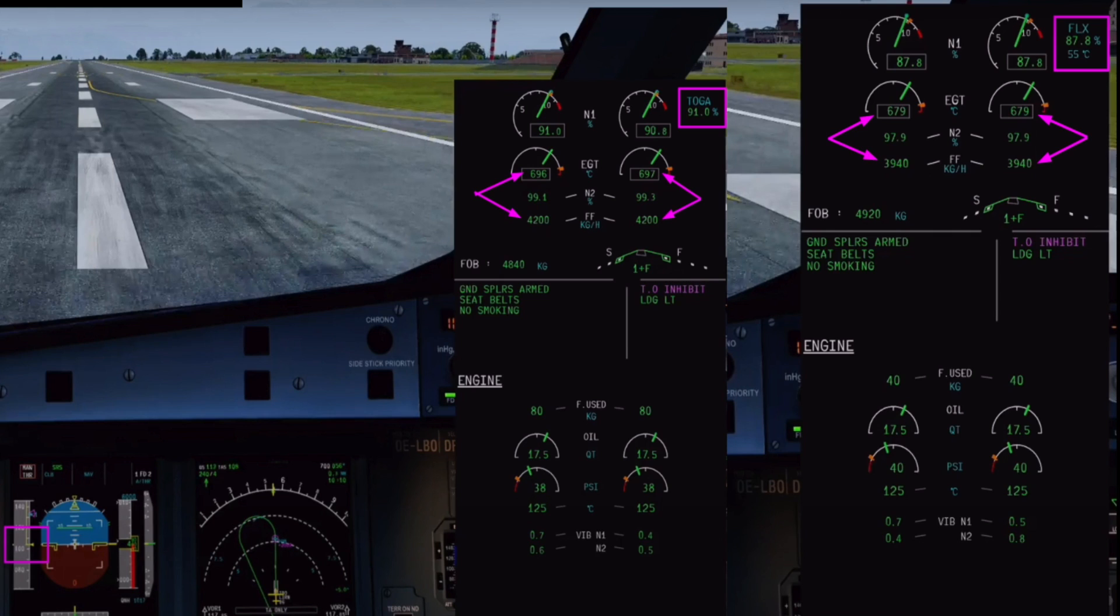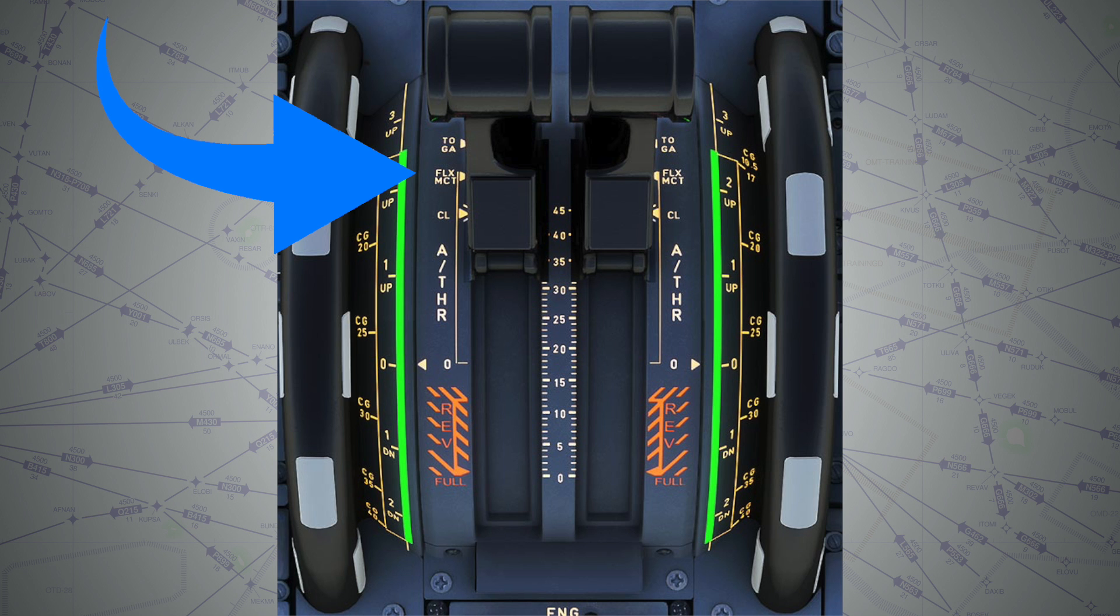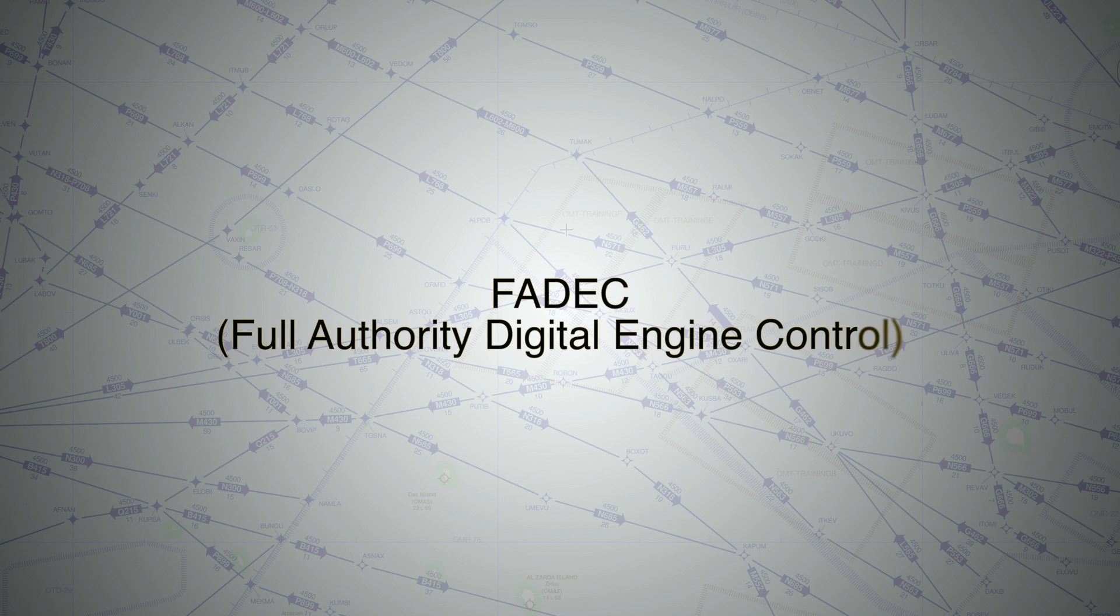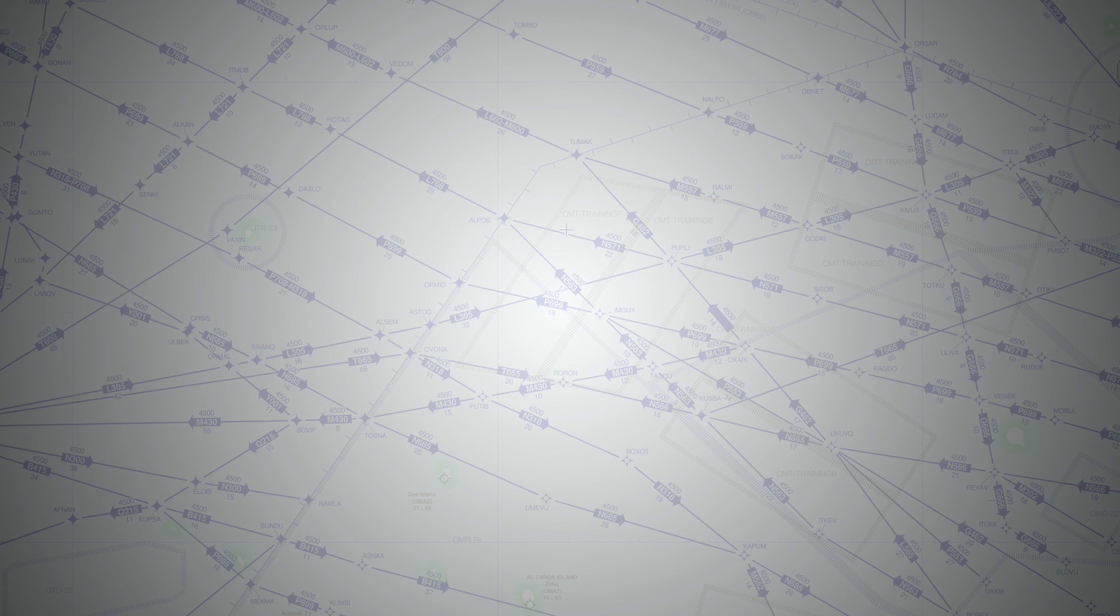In the Airbus fleet, for example, you set the thrust levers to FLEX MCT detent and the FADEC, or Full Authority Digital Engine Control, orders the engine to only provide a specific amount of thrust that corresponds to the flex temperature, or fake outside air temperature so to speak, that you put in the MCDU during your preflight preparation.